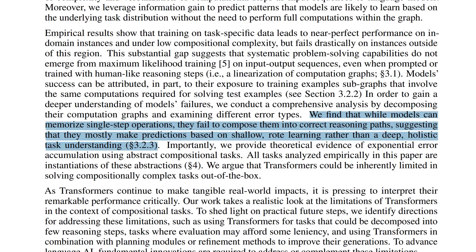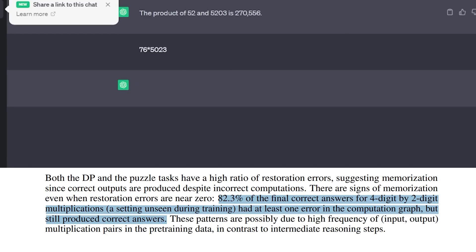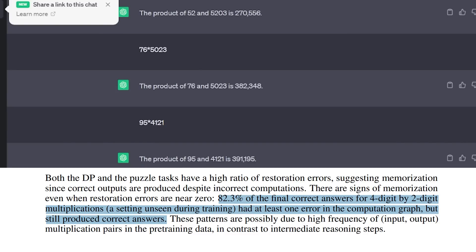Second, the models are able to correctly perform single-step reasoning, potentially due to memorizing such single-step operations during training. This brings us to the third point — memorization — which leads to incorrect calculations but correct answers. We've all tried to use ChatGPT for math questions, and they sometimes just land on the correct answer with completely wrong workings. In this research, they found that 82.3% of the final correct answers for four-digit by two-digit multiplications had at least one error in the computation graph, but still somehow produced the correct answers.